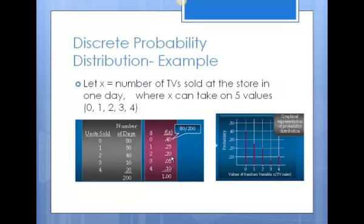Let x be the number of TVs sold at the store in one day, where x can have up to 5 values: 0, 1, 2, 3, or 4 TVs. We have a sample of 200 days. On 80 days, you sold no TVs, so f(0) or P(x=0) is 0.4, which is 80 over 200, or 40%. The probability of selling one TV is 25%, two TVs is 20%, and so on. All probabilities for all possible outcomes must add up to 100% by definition.